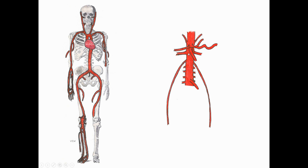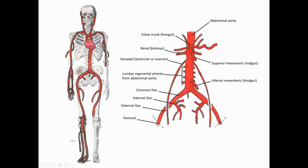Just as we had paired renal vessels, we have paired gonadal vessels — a testicular artery in males and an ovarian artery in females. The abdominal aorta ends as it splits into the right and left common iliac arteries. There is typically a median sacral artery coming off there. The common iliac arteries branch into an internal iliac artery going to the pelvic organs and some gluteal muscles, as well as the external iliac artery, which crosses the pelvis and becomes the femoral artery going to the lower limb.